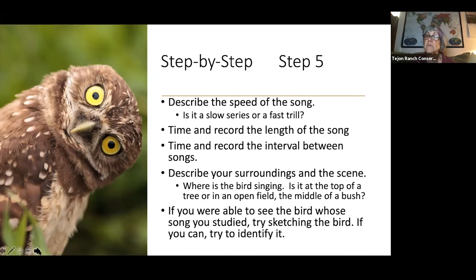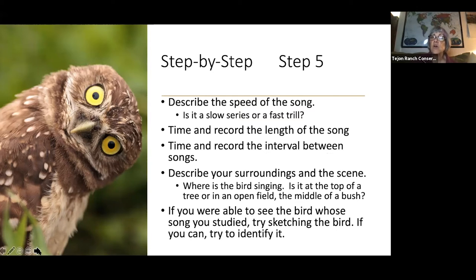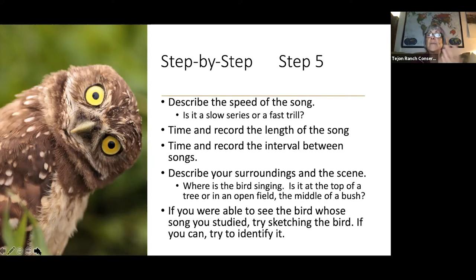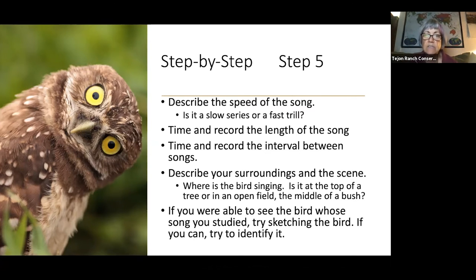The next step is to describe the speed of that sound. Is it a slow series or is it a fast trill? Now you're going to use the one, two, three part of your journaling — you're going to start timing the song and recording its length. You're estimating; you don't have to have a stopwatch. You can say one one-thousand, two one-thousand, three one-thousand to get an idea of how many seconds. You're going to time the length of the song and also the interval between songs. The bird sings a song, takes a break, then repeats that same song — so you're timing both the length of the song and the interval between them.